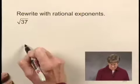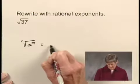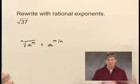Now remember we have a rule that says that the nth root of a to the m power can be written with rational exponents as a to the m over n power.